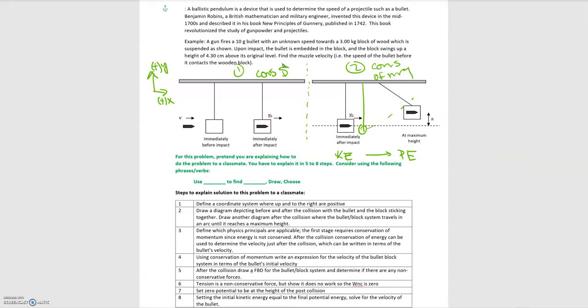You'll be able to solve for the velocity of the bullet and block using conservation of momentum, written in terms of the bullet's velocity. Then moving to step five — the second part — with conservation of energy, we need to ask what forces are acting in the system, because we need to account for any work done by non-conservative forces. So draw a free body diagram and a work diagram.